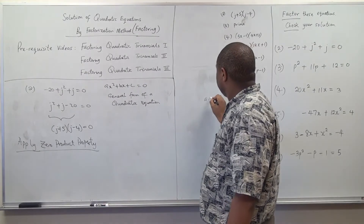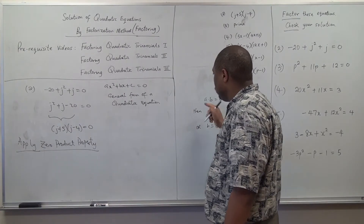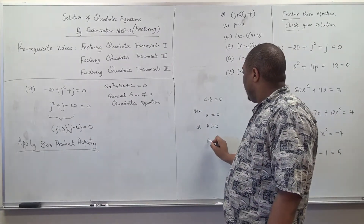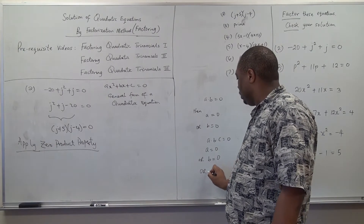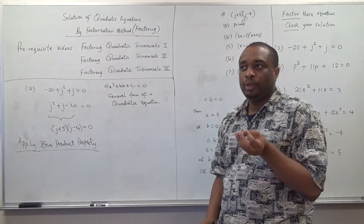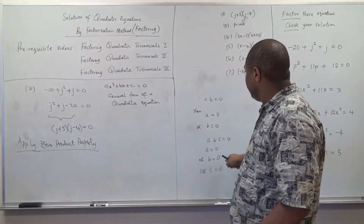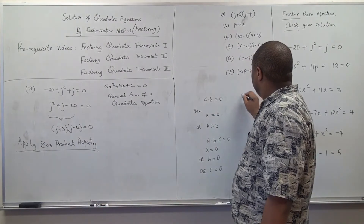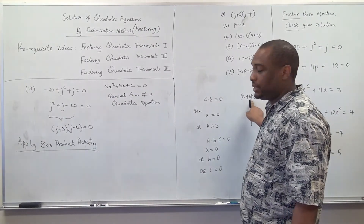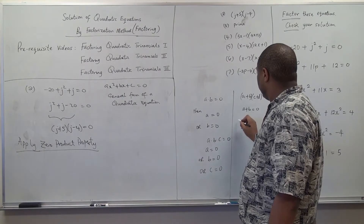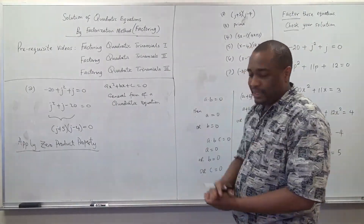For example, if we have A times B equal to zero, then A must be zero or B must be zero. If we have A times B times C equal to zero, that means A must be zero, or B must be zero, or C must be zero — one of them must be zero. It could be two of them, it could be all of them. Similarly, when we have A plus B times C plus D equal to zero, that means either A plus B equals zero or C plus D equals zero, because the parenthesis means times.